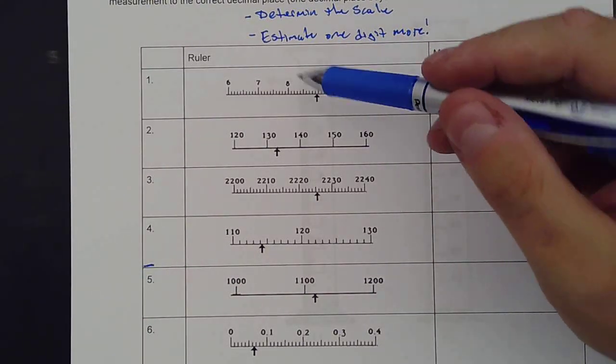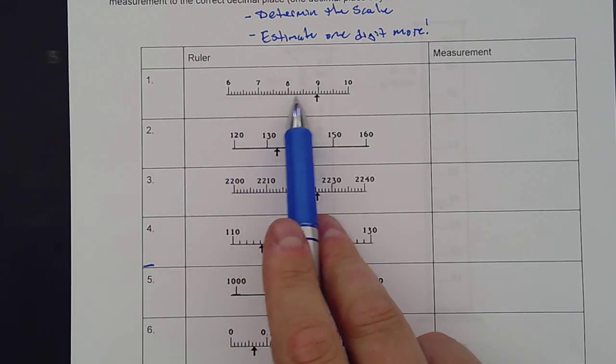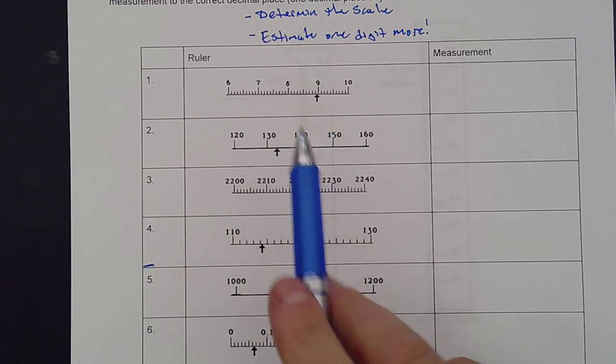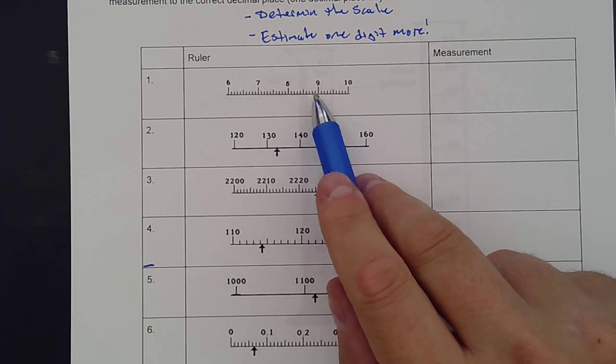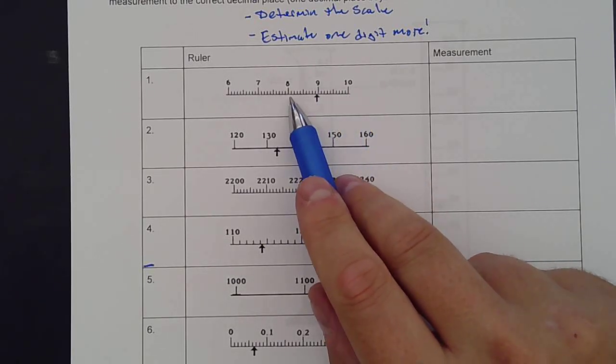In this first one, I know it's at least six, seven, eight. It's not nine yet. This arrow is coming before that nine. What is the scale here? It's going up by ones: eight, nine, ten. And then there's those little hash marks.